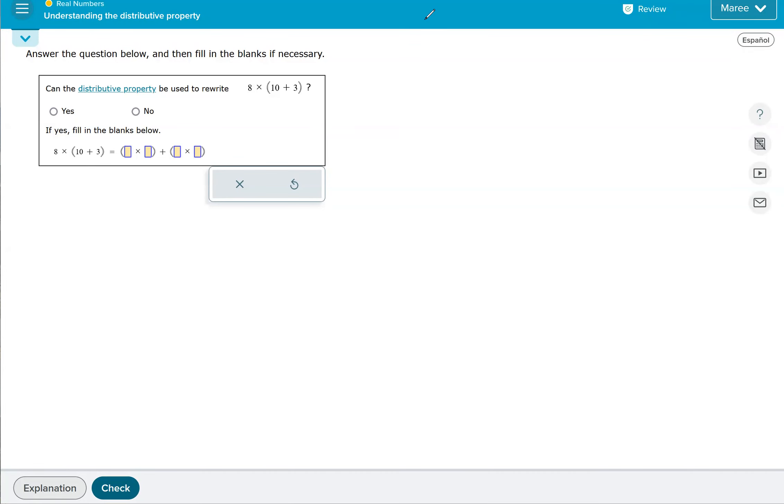This topic is called understanding the distributive property. The distributive property is when you are multiplying a number or variable to something that's inside parentheses. I'll write it without numbers first. This is kind of like what the property is where a, b, and c are not equal to zero.